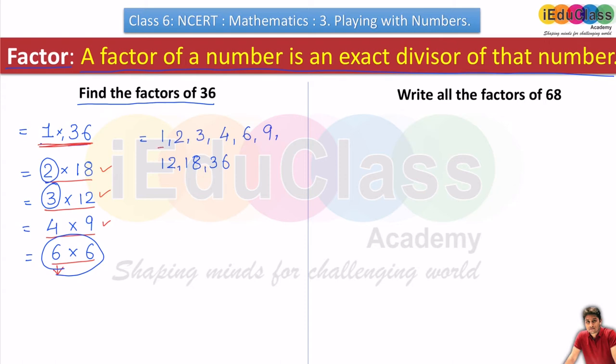Now just you see: 1, 2, 3, 4, 6, 9, 12, 18, and 36 - all these numbers can divide 36 without remainder. These are exact divisors of 36. See: 1×36, 2×18, 3×12, 4×9, 6×6, 9×4, 12×3, 18×2, and 36×1. So these all numbers can divide, so these are factors of 36. Same way we will find factors of 68.